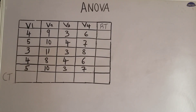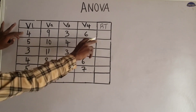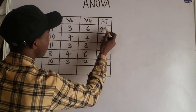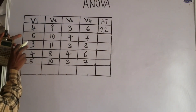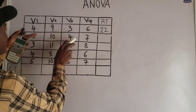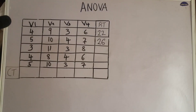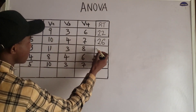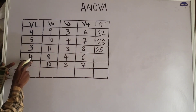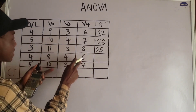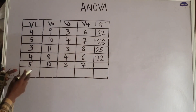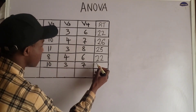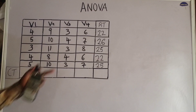Let us take the row total first. For the first row, the row total is 4 + 9 + 3 + 6, which gives 22. For the second row, 5 + 10 + 4 + 7 gives 26. For the third row, 3 + 11 + 3 + 8 gives 25. For the fourth row, 4 + 8 + 4 + 6 gives 22. For the fifth row, 5 + 10 + 3 + 7 gives 25.